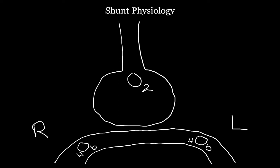Let's talk about shunt physiology, as this is something that always confuses learners. Typically, oxygen will move across the alveolar-capillary gradient, be picked up by hemoglobin as blood is pumped from the right side of the heart, and taken back to the left side of the heart. If you have pulmonary edema, fluid impedes gas exchange, and oxygen is not able to move across the alveoli into the capillary. The same applies with pus, collapsed alveoli, or blood from a contusion — these patients typically need positive pressure ventilation.